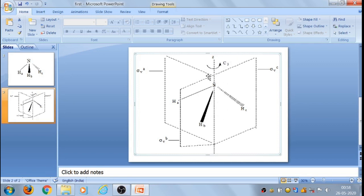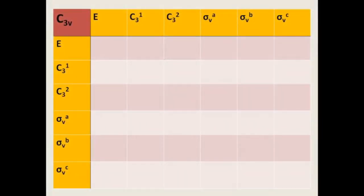When C3I (the 120-degree rotation) is applied, HA moves to the position of HC, HC moves to the position of HB, and HB moves to the position of HA. Similarly, for C3II, the 240-degree rotation, HA rotates 240 degrees to reach the position of HB, HB rotates to reach the position of HC, and HC rotates to reach the position of HA. So these are the six symmetry elements: identity E, C3I (120-degree rotation), C3II (240-degree rotation), and the three vertical planes sigma VA, sigma VB, and sigma VC.